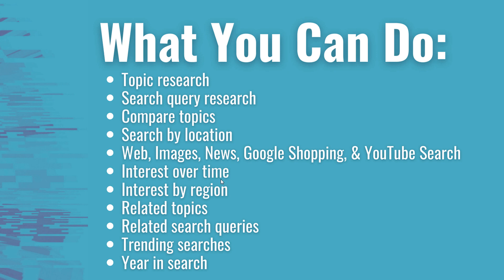You can see the interest in a topic or search term over time, and the interest by specific region or worldwide. You can see related topics and related search queries for anything you're researching. You can see trending searches and also a year in search — so you can go back to 2012, for example, and see what the top things people were searching for that year. You can also set up subscriptions to get an email weekly or monthly with what's new in your Google Trend.